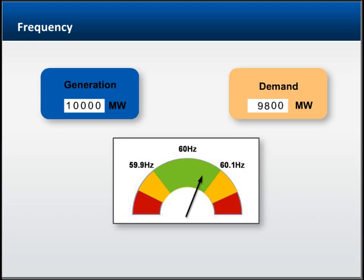Alternately, as demand drops and there's too much power on the system, the generator's speed of rotation increases, thereby increasing frequency.